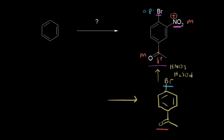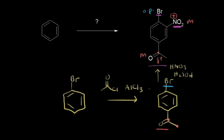We can do a Friedel-Crafts acylation here, taking off the acyl group, leaving bromobenzene as our starting material. Again, we need two carbons on our acyl group — one and two — so a two-carbon acyl chloride, with aluminum chloride as catalyst. You might wonder how we can do a Friedel-Crafts acylation with a deactivating group like bromine. Remember, bromine is only weakly deactivating. You can't do it with a moderate or strongly deactivating group, but since bromine is weakly deactivating, you can still do this reaction and get the para product as the major product.